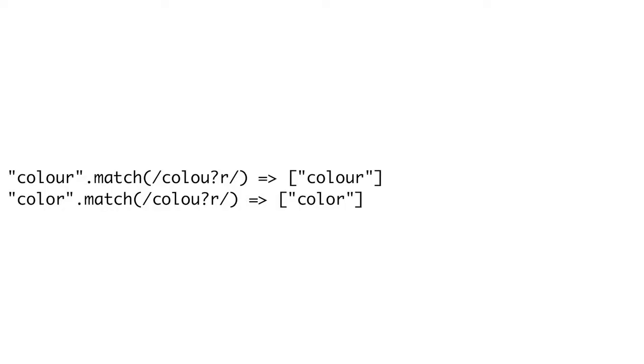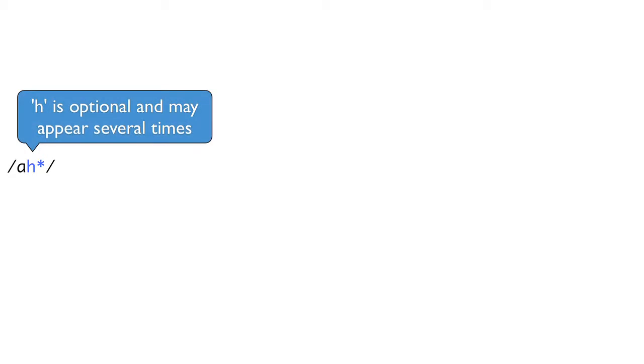There are several special characters in regular expressions, but the most common ones are question mark, star, and plus. The question mark says that the character before it is optional, or it can appear zero or one time. For instance, if we wanted to search for the different spellings of 'color', we could use the expression C-O-L-O-U? R. That means the U is optional, so it could spell color either way. The star is like the question mark, but it allows the preceding character to be there zero times, one time, or many times in a row.